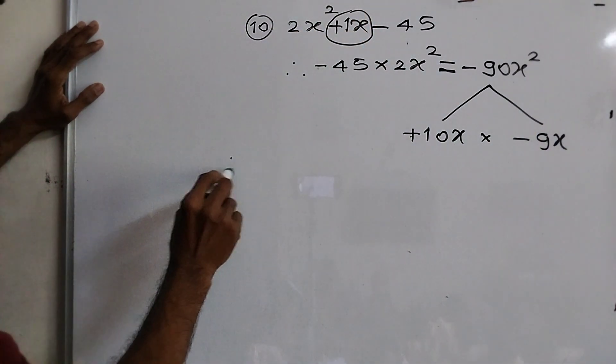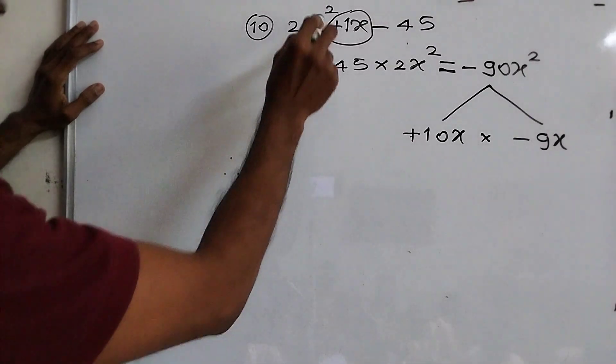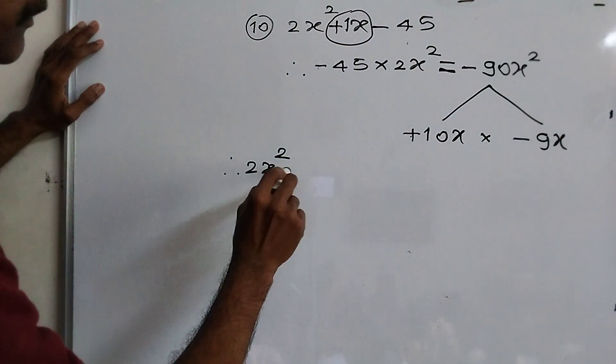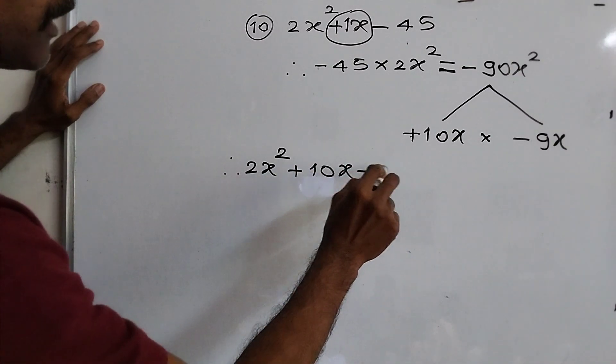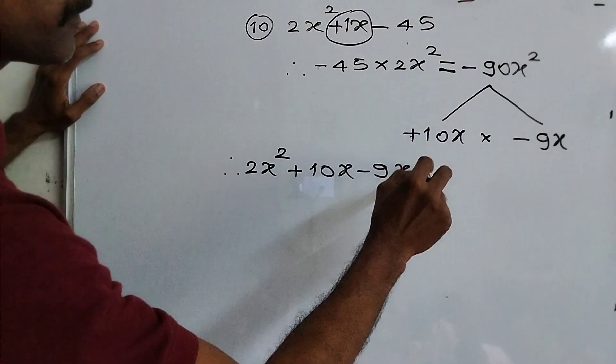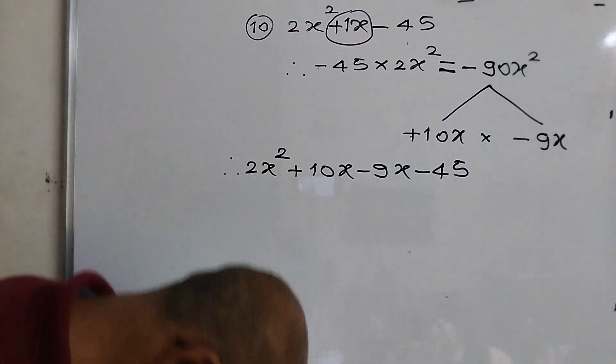2x square instead of this plus 10x minus 9x minus 45. Did you understand?